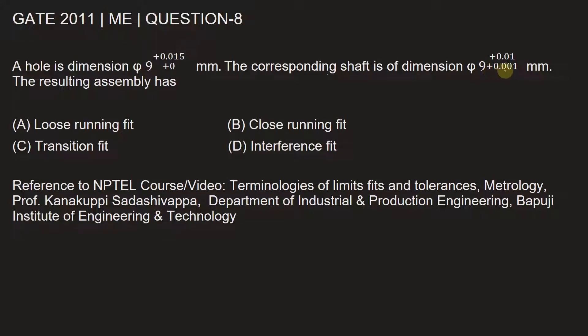of tolerance +0.001 millimeters. The resulting assembly has which type of fit? Option A: loose running fit, Option B: close running fit, Option C: transition fit, or Option D: interference fit. Let's